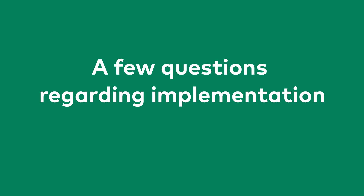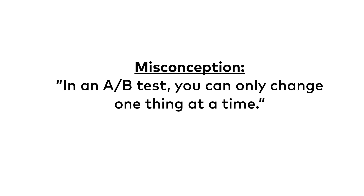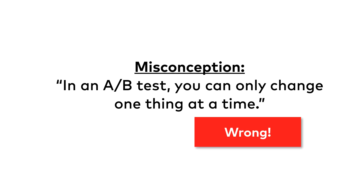I get a few questions very commonly regarding the implementation of an A-B test. In this video, I want to address four of these. The first one is what I call the change-one-thing-at-a-time myth, and this is a very common A-B testing misconception — that in an A-B test, you can only change one thing at a time.